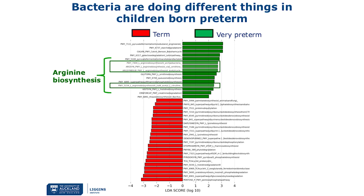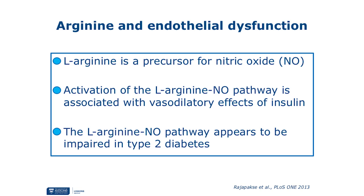We then looked at bacterial activity in these children. Although there are various differences between groups, we mainly observed that arginine biosynthesis pathways are highly expressed in the preterm group compared to the term group. Arginine is an amino acid important for several metabolic functions. It is a precursor for nitric oxide synthesis, and the arginine and nitric oxide pathways are important for some functions of insulin. In type 2 diabetic patients, this arginine and nitric oxide pathway has been found to be impaired. This gives us a clue that in very preterm children, higher expression of the arginine biosynthesis pathway can be linked with adverse metabolic profiles.